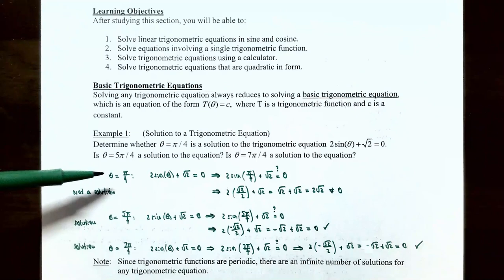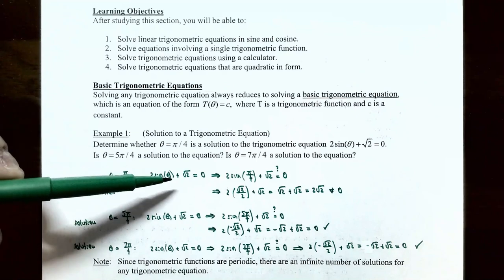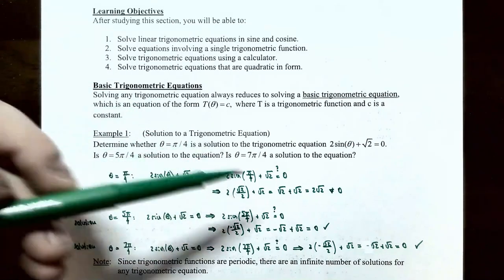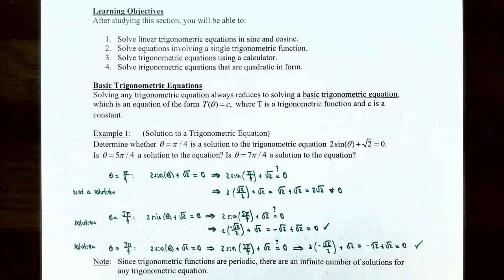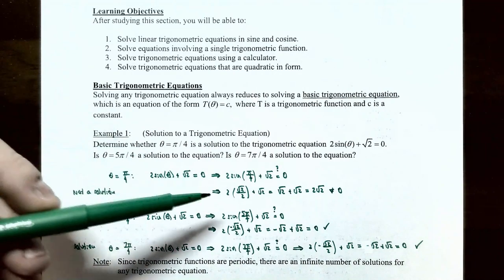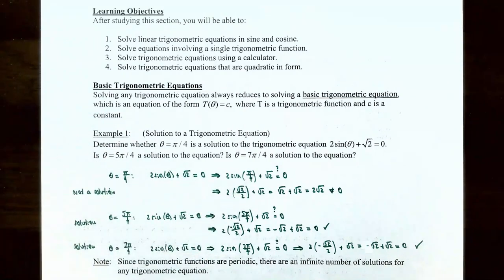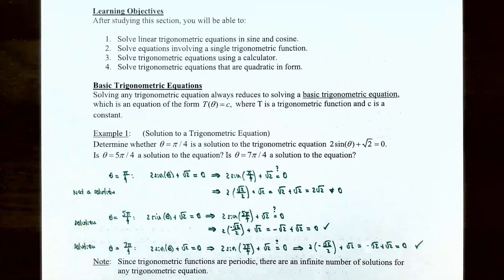If θ = π/4, substitute into 2 sin(θ) + √2 = 0: we get 2·(√2/2) + √2 = √2 + √2 = 2√2, which is not equal to 0. Therefore θ = π/4 is not a solution because it does not make the equation a true statement.